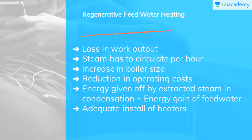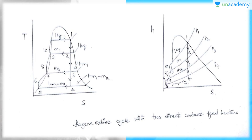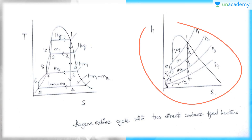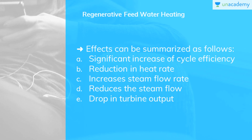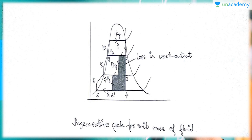The effects of regenerative feed water heating are as follows: it significantly increases the cycle efficiency and reduces the heat rate, that is, the operating cost. It increases the steam flow rate, it reduces the steam flow to the condenser, and if there is no change of boiler output, the turbine output drops. You can see the regenerative cycle T-S diagrams and H-S diagrams with two direct-contact feed heaters. This is the reduction in heat rate, increased steam flow rate, and drop in turbine output. The hatched area shows where the loss in work output happens. This is the regenerative cycle for a unit mass of fluid.